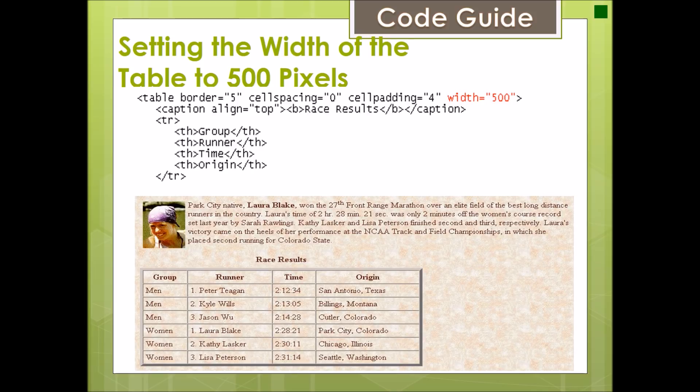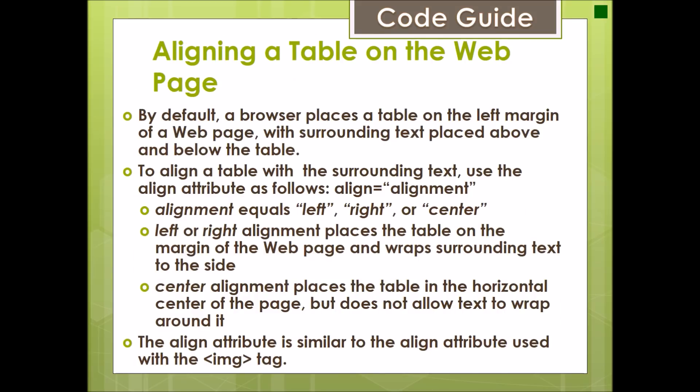This is an example of setting the table width to 500 pixels. For alignment: by default, a browser places a table on the left margin of a web page. You can change the alignment to left, right, or center using the align attribute. The align attribute is similar to the align attribute used with the image tag.